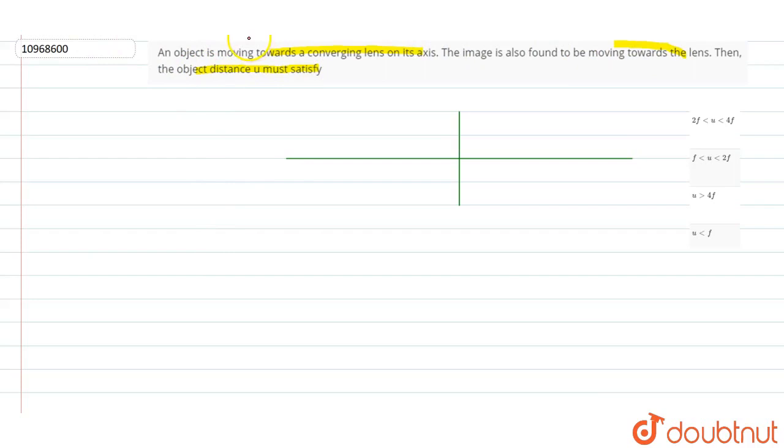So the object is moving towards the converging lens on the axis. The image is also moving towards the lens. This means the image is moving from minus infinity towards zero, from left to right. This is a convex lens, a converging lens.